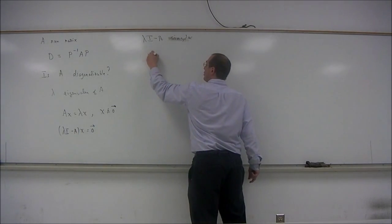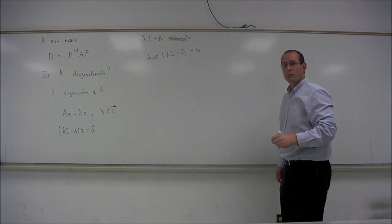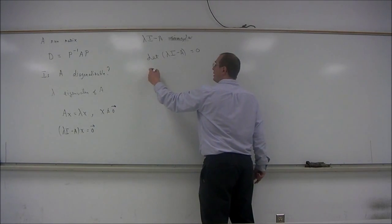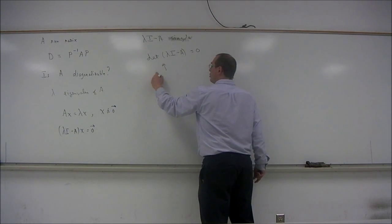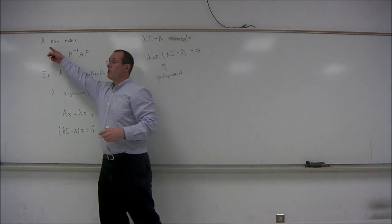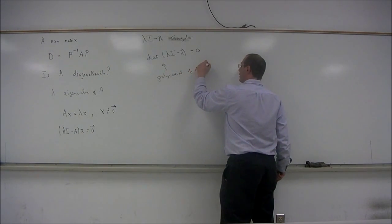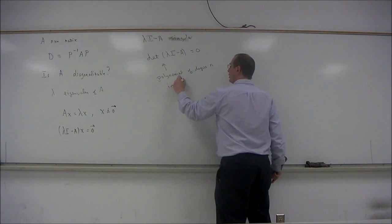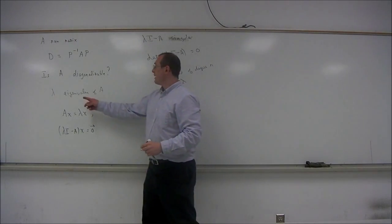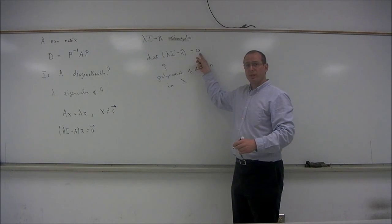So in other words, we would like the determinant of lambda I minus A to be zero. So this determinant of lambda I minus A, this will be a polynomial of degree N, where A is an N by N matrix. A polynomial of degree N in the variable lambda. So the eigenvalues of the matrix A will be the solutions to this polynomial equation.